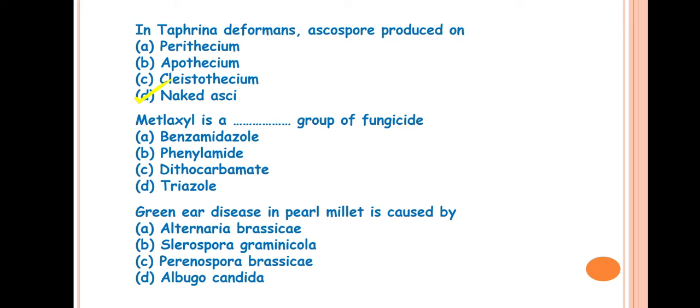The next question is, metalaxyl is a group of fungicide? This metalaxyl is a systemic fungicide of phenylamide group. It can be used both as protective or curative. This is the best fungicide against oomycete fungi, that is Pythium, Phytophthora and different downy mildew fungi. Its mode of action is inhibition of transcriptional process, partially inhibits RNA synthesis and also inhibits protein and nucleic acid synthesis. It is available in different trade names like Ridomil, Apron, Subdue, and Turf.